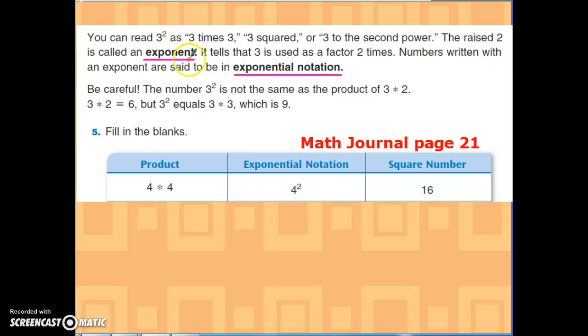The raised two is called an exponent. So we have this vocabulary word: exponent. It tells us that three is used as a factor two times. Numbers written with an exponent are in exponential notation.